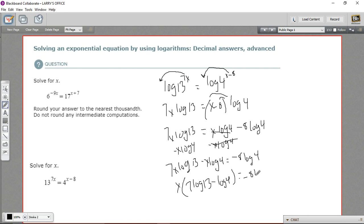And over here, we're going to divide by this quantity right here. When we do that, this will go away. And over here we'll get 7 log 13 minus log 4.